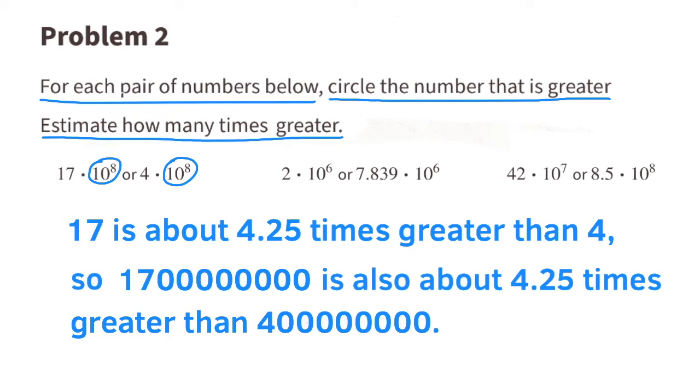What are these numbers? Let's put commas in. 1,700,000,000 is also about 4 and a quarter times greater than 400,000,000.